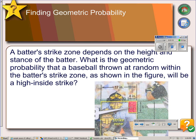In our last example, we're going to look at finding probabilities using areas. A batter's strike zone depends on the height and stance of the batter. What is the geometric probability that a baseball thrown at random within the batter's strike zone, which is this yellow box, will be high and inside, which is the red part of the box.